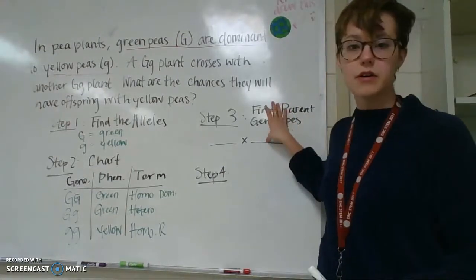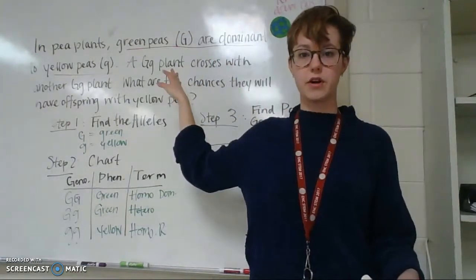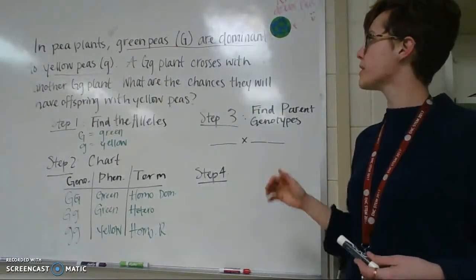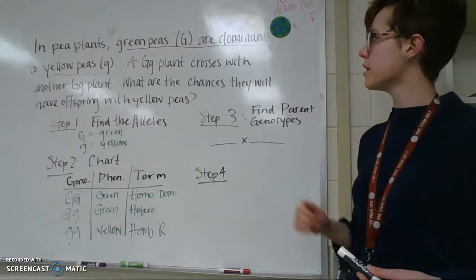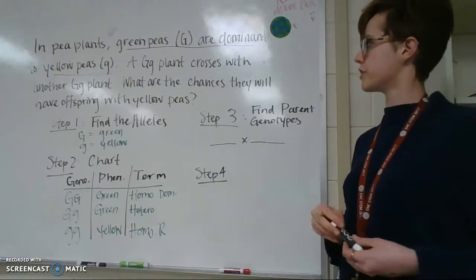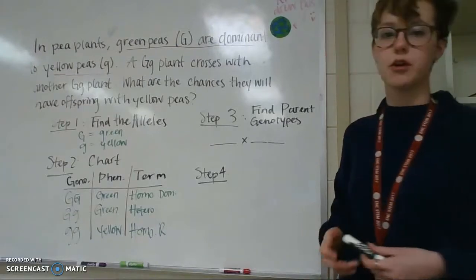So for step three, we have to go back and reread our problem. It says, in pea plants, green peas are dominant to yellow peas. A GG plant crosses with another GG plant. What are the chances they will have offspring with yellow peas?